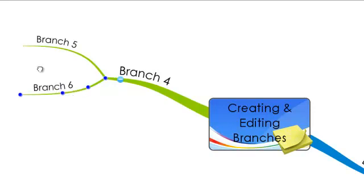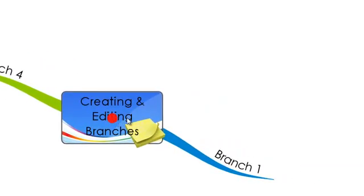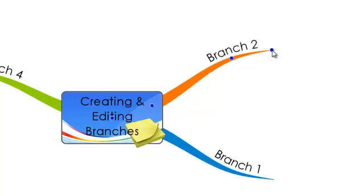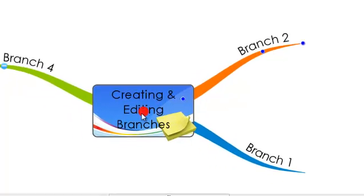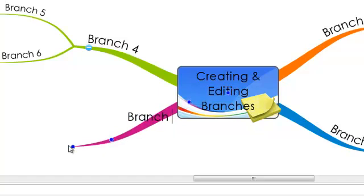If you are creating a new branch by clicking on the red dot, dragging out and releasing, typing now will add the text straight onto the branch. You can drag, release, type and enter.